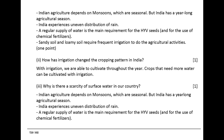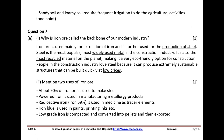Why is there a scarcity of surface water in our country? Indian agriculture depends on monsoons, which are seasonal, but India has a year-long agricultural season. India experiences uneven distribution of rain. A regular supply of water is the main requirement for HYV seeds. Sandy soil and loamy soil require frequent irrigation.